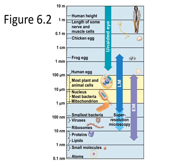Figure 6.2 shows the size range of cells. At the top of the figure, we can see things visible with the unaided or naked eye, such as the length of some nerve and muscle cells. As we go further down, most plant and animal cells, as well as the nucleus, most bacteria and mitochondrion need a light microscope to be visualized. Some smaller things like the mitochondrion can be better seen with even better resolution in an electron microscope. The smaller we get, the more powerful microscope we are going to need.